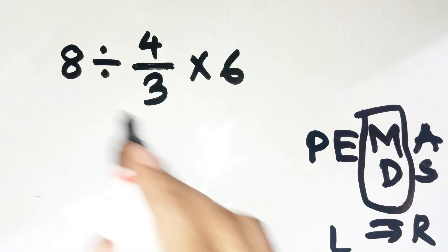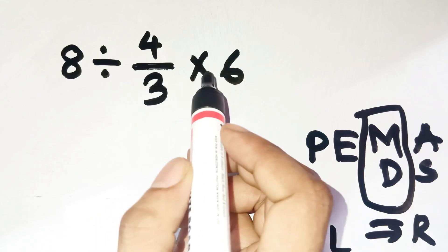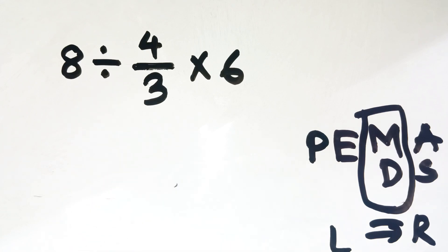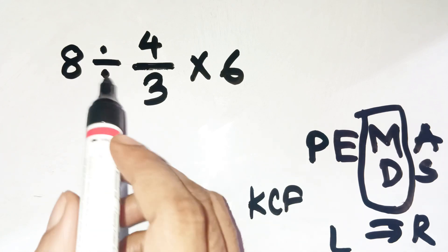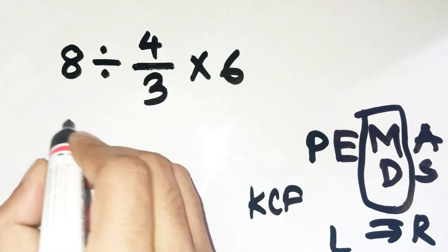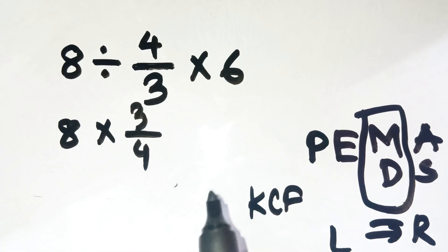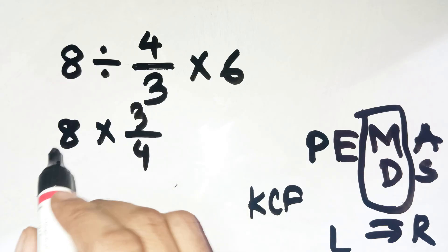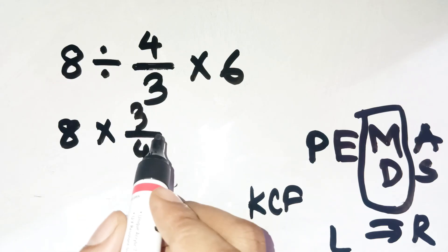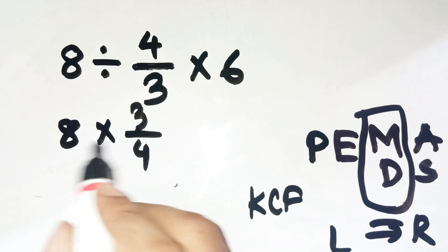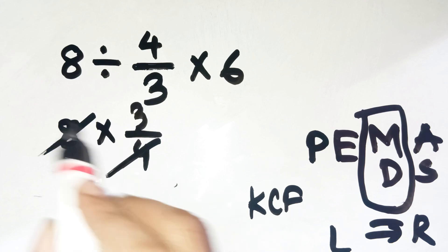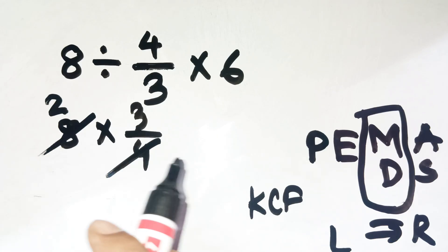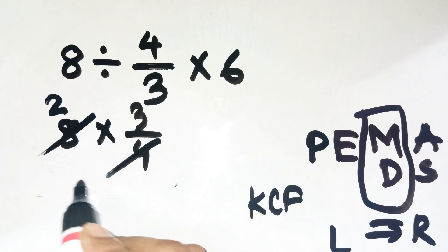Let's rewrite the expression as 8 divided by 4 thirds times 6. Dividing by a fraction means using the KCF rule — keep, change, flip. So 8 divided by 4 thirds becomes 8 times 3 fourths. Let's simplify carefully: 8 is the same as 8 over 1, so we have 8 over 1 times 3 fourths. We can simplify before multiplying — 8 and 4 share a factor of 4. Divide 8 by 4 to get 2, divide 4 by 4 to get 1. Now we have 2 times 3 over 1, which equals 6.